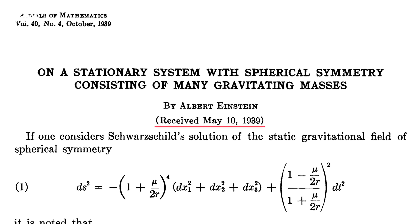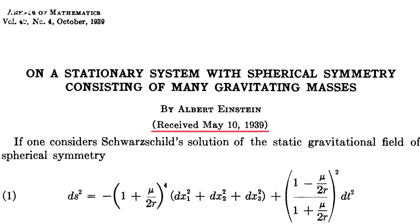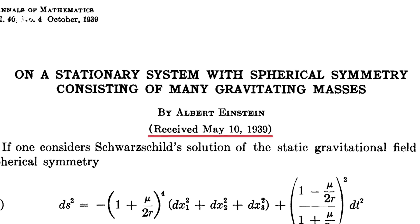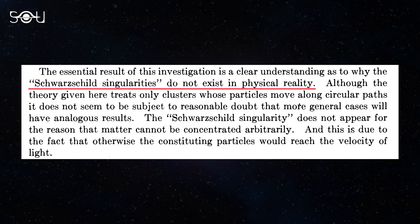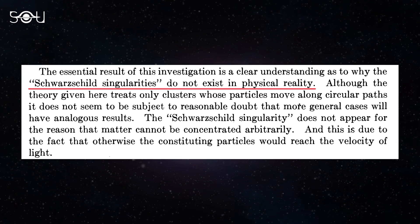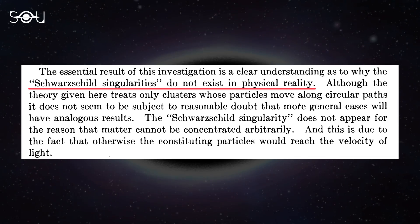Subsequently, in 1939, Einstein published a paper in which he rejected the concept of black holes by making various assumptions that were later proven to be false. In his paper, he wrote that Schwarzschild's singularities do not exist in physical reality.